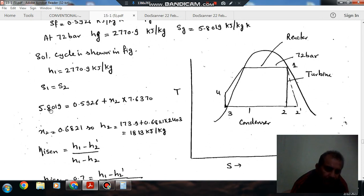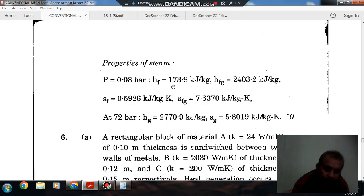S1 is 5.8019, and S2 dash equals the summation of sf plus x2 dash into sfg. We have called it x2 dash, so it will be x2 dash times 7.6370. These two things we have obtained from the given data at 0.08 bar.